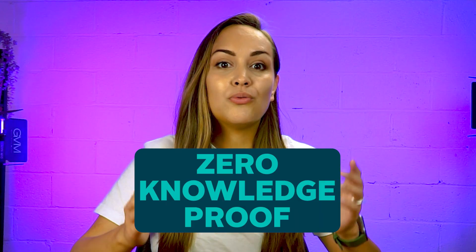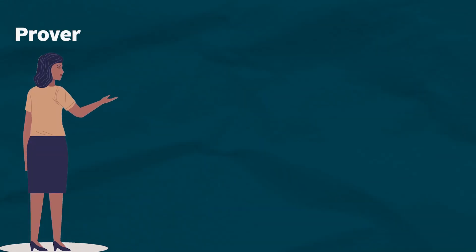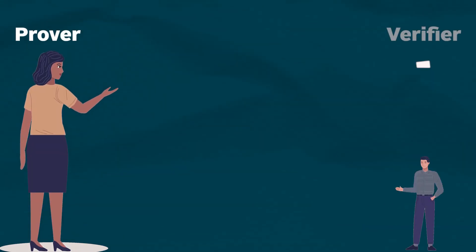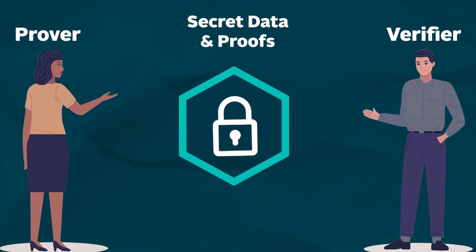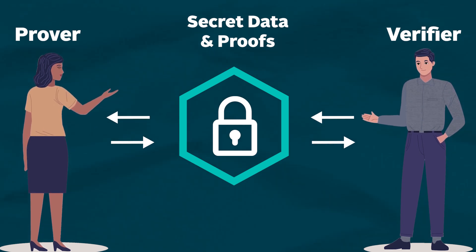Like Zcash and Monero, TornadoCash employs zero-knowledge proof, a way of doing authentication that lets one party prove to the other party that they know a secret without revealing what the secret is. We have a detailed video explaining how this authentication method works, so check that one out right here.